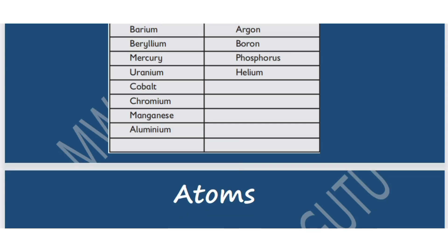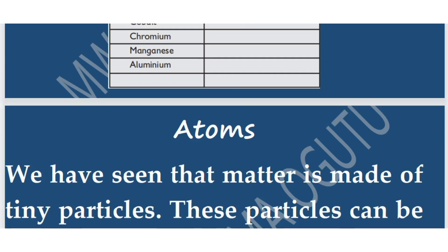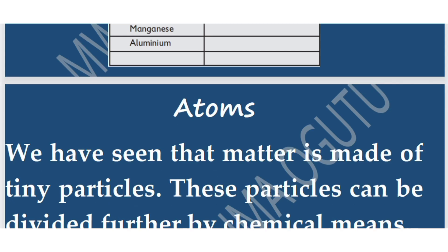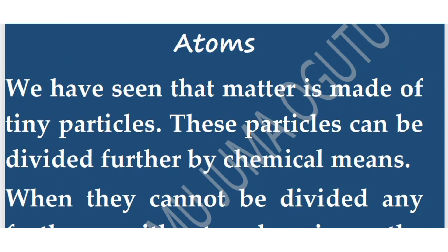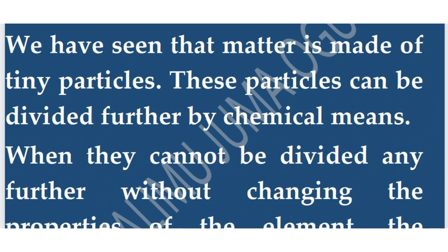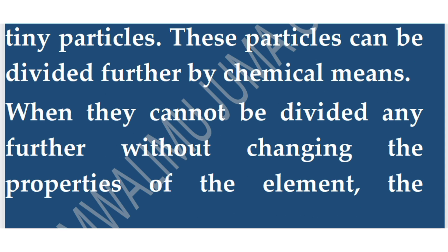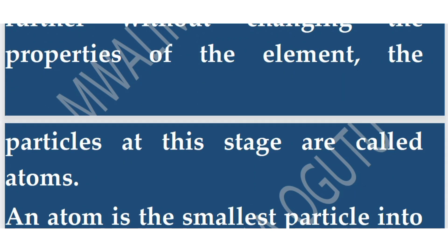Now let's discuss atoms. Matter is made up of tiny particles. These particles can be divided further by chemical means. When they cannot be divided any further without changing the properties of the element, the particles at this stage are called atoms. Atoms cannot be split further.